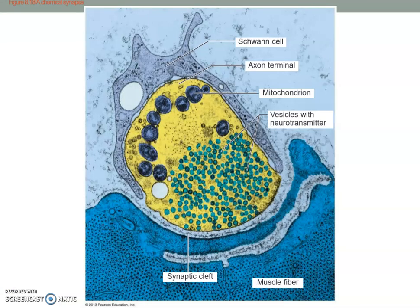Here is an image showing the synapse. You can see the vesicles containing neurotransmitter — the light blue spheres. This is the presynaptic membrane, and this is the postsynaptic membrane. The space between them, which is very tiny, is the synaptic cleft.